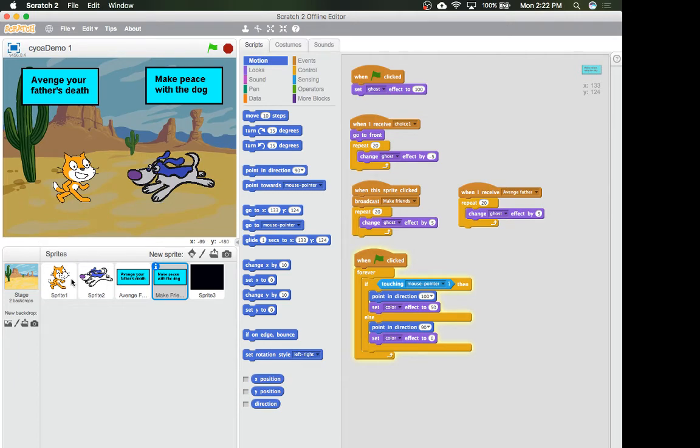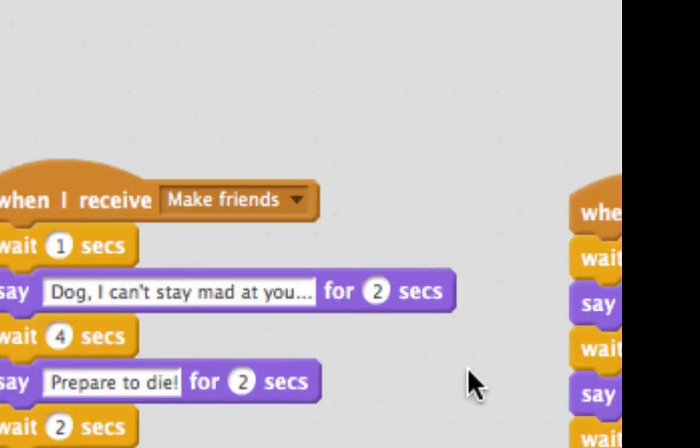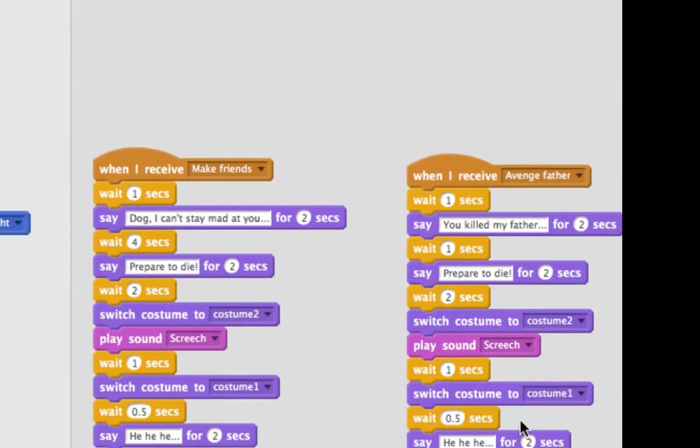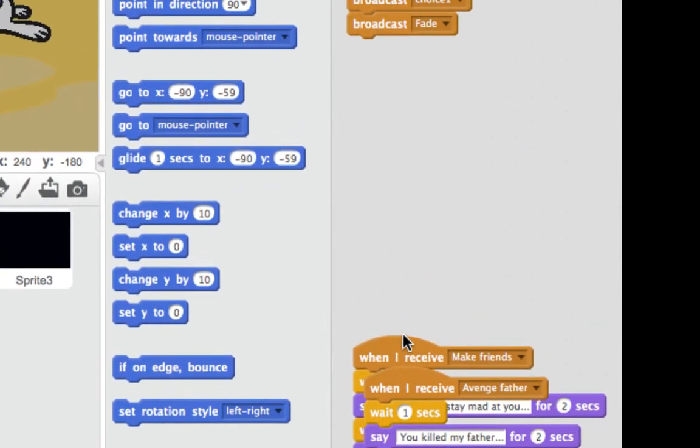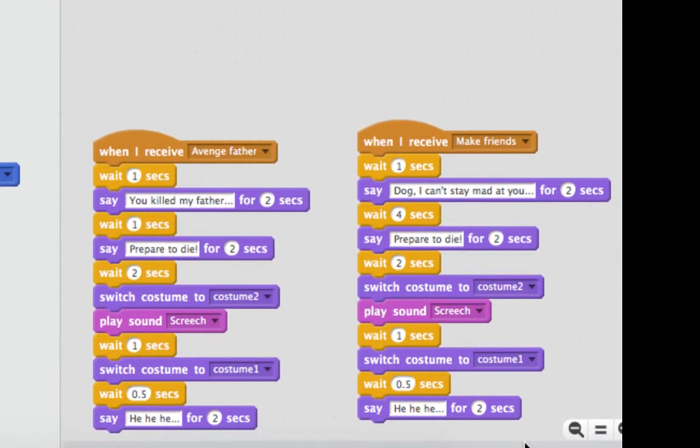So let me show you the cat, for example. These two scripts down here are the different receive triggers. So you'll notice the one – actually, I'll line them up a little bit differently. There we go. Check it out. The one on the left – I got it right this time. The Avenge Father storyline is here. You know, you killed my father. Prepare to die. Switch to the laser eyes. Play a little sound effect.